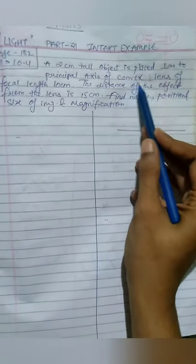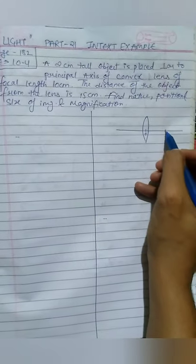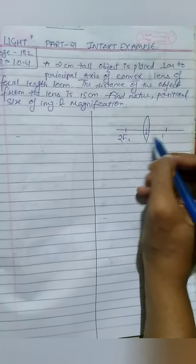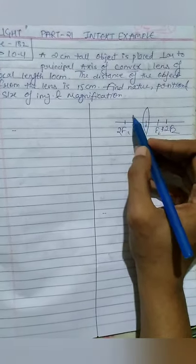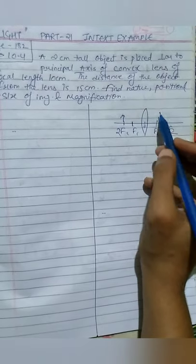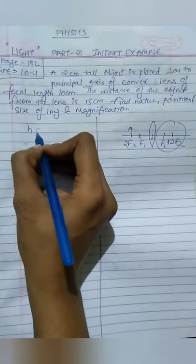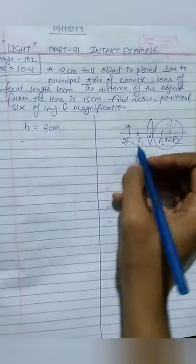This is a convex lens and the object is located here, which is between 2F1 and F1. What happens is the object is located here and the image comes on this side. The 2 centimeter tall object is placed here which is positive height because this is the upper side, so it will be positive.